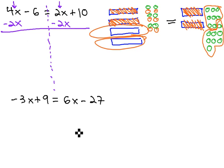Notice as we do this, we will line up like terms, so the two x's subtract out to zero, and we're left with two x, minus six, and ten on the right.